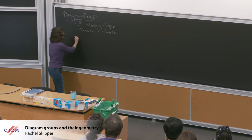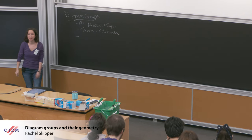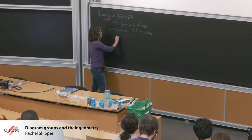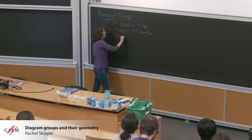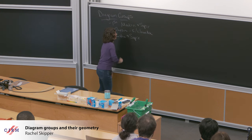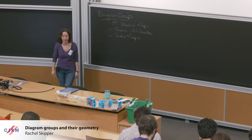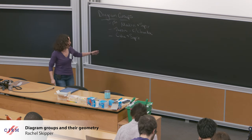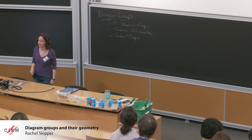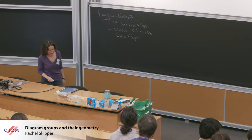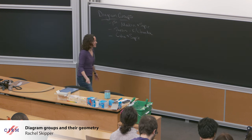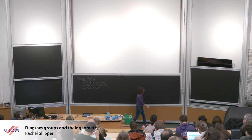Over the years, Guba and Sapir did an extensive amount of work really developing out the theory. Much of the historical work goes back to Guba and Sapir, including a memoirs of the AMS, which is available in the library, written by Guba and Sapir on this topic. There are a lot of reasons to study these diagram groups.